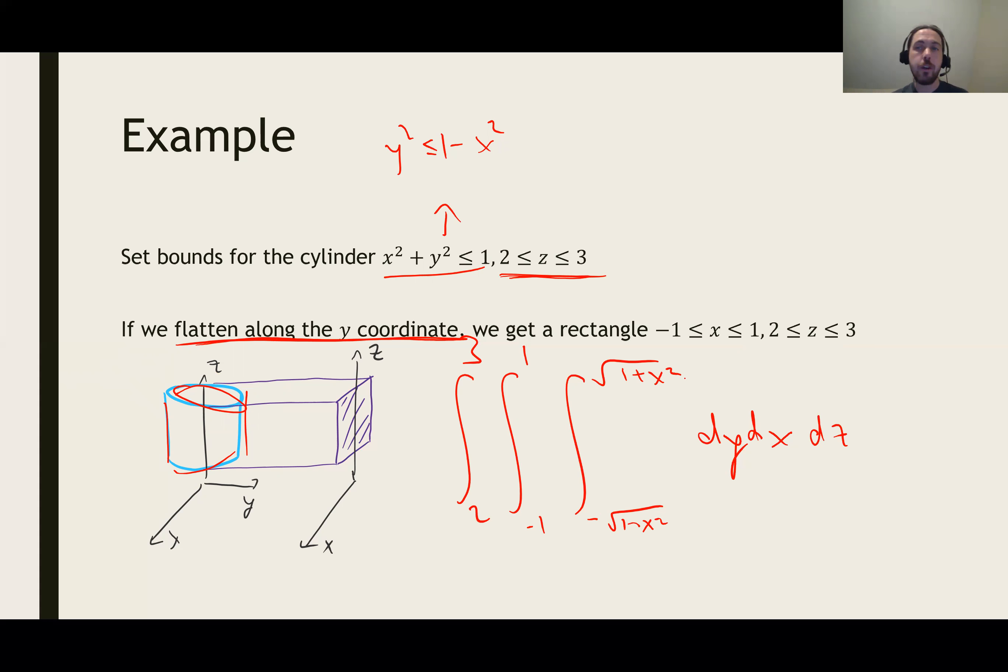As you can see, we could have flattened this in different ways. We could have flattened it in the x direction and got a different rectangle. We could have flattened it vertically and gotten a circle for our outside boundary and then just the bounds from 2 to 3 for our inside integral because those are the smallest and biggest z could be. Different choices, different orders will give us different bounds of integration.